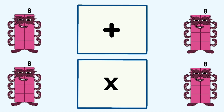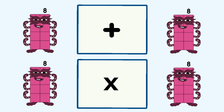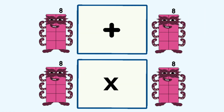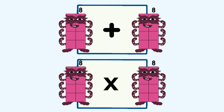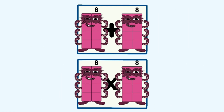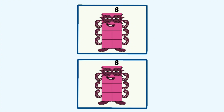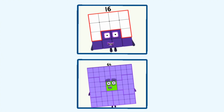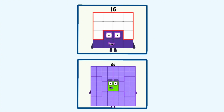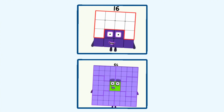8 plus 8 and 8 times 8 equals 16 and 64.